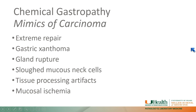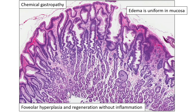The major situation in which you'll come up against benign repair-type changes that simulate neoplasia is in the context of chemical gastropathy with ulcers. There are a lot of different scenarios: epithelial cell atypia related to repair, gastric xanthomas or macrophage responses to ruptured epithelial cells, sloughed mucus neck cells that simulate signet ring cell carcinoma, tissue processing artifacts, and mucosal ischemia.